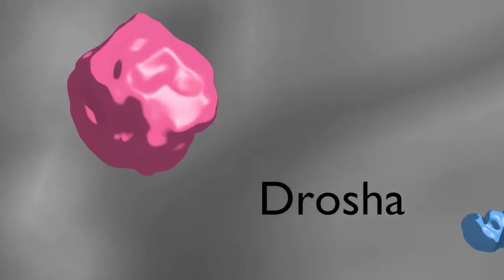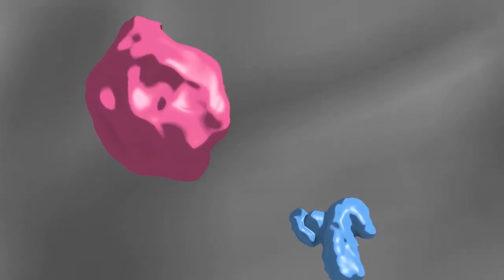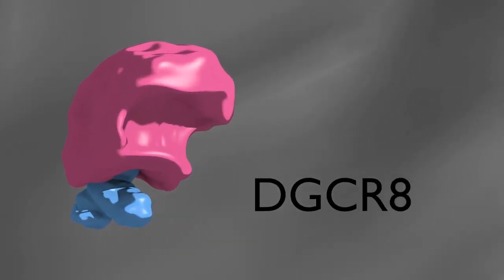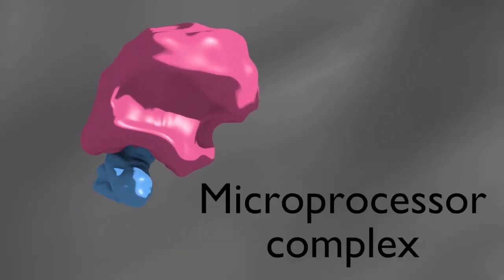This structure serves as the initial substrate for processing by Drosha, a nuclear RNase III enzyme. Drosha interacts with a specialized RNA binding protein called DGCR8 in humans to form what is termed the microprocessor complex.